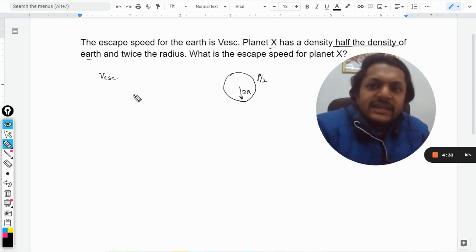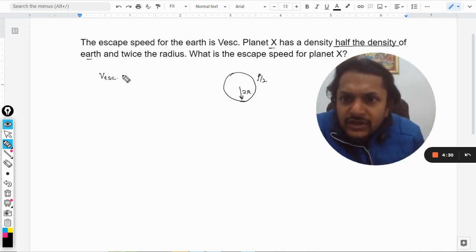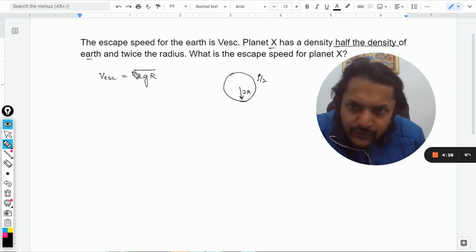So now first of all let us see how you can express the escape speed for the earth. So escape speed for earth can be written like this. This is one of the very famous formulas for it. I have given this complete description in a couple of other videos.